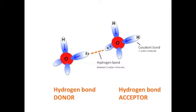The donor is the molecule with the polarized hydrogen, and the acceptor molecule has the lone pair of electrons. Water is really cool because it is both a hydrogen bond donor and a hydrogen bond acceptor. It's got both polarized hydrogens and lone pairs of electrons.